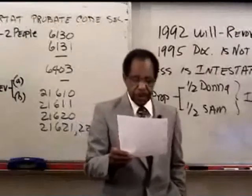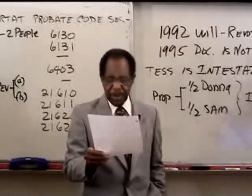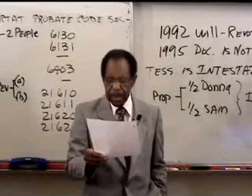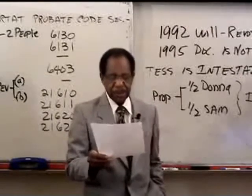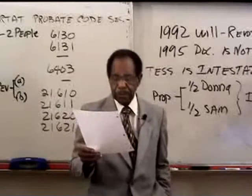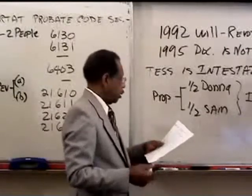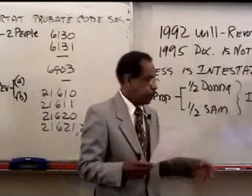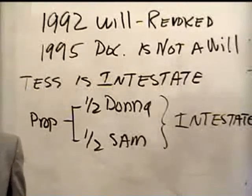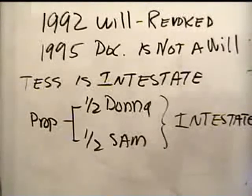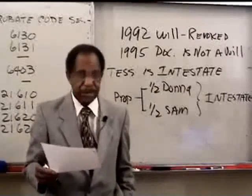The 1995 will was unmarred. Tess is survived by Donna, Sam, and Fred. Her net estate consisted of BigCo stock worth $400,000 and cash worth $600,000. If it goes intestate, it'll go half and half — $500,000 each. But we could try to use DRR (dependent relative revocation) to revive the 1992 will. The 1992 will was revoked in the belief that the 1995 will was valid, but it wasn't.